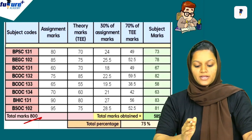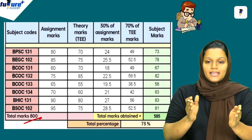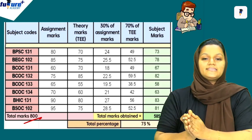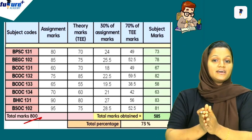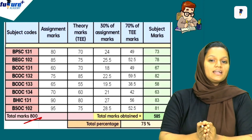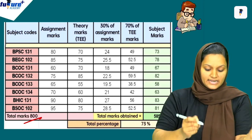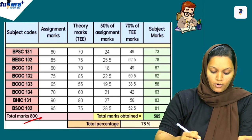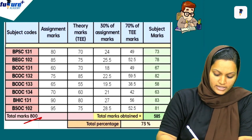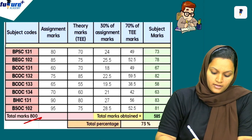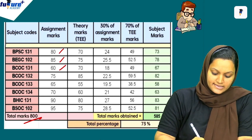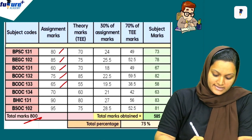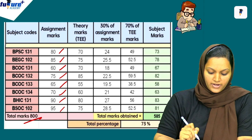Ascending the assignment — we are going to get the assignment marks. The values are: 80, 85, 60, 75, 65, 70, 90, 55.